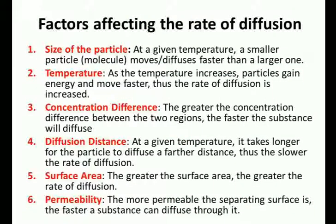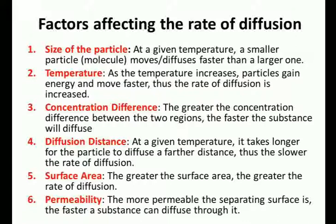Several factors affect the rate of diffusion in living organisms. First, particle size: at a given temperature, smaller molecules diffuse faster than larger ones — smaller the size, faster the diffusion. Second, temperature: as temperature increases, particles gain energy and move faster, so the rate of diffusion increases. Diffusion is directly proportional to temperature — more the temperature, faster the diffusion.